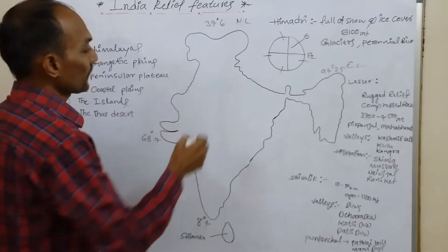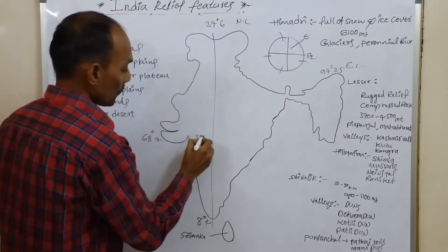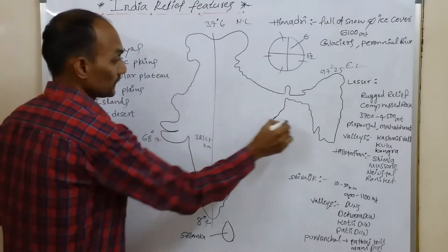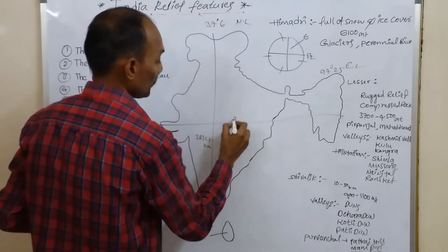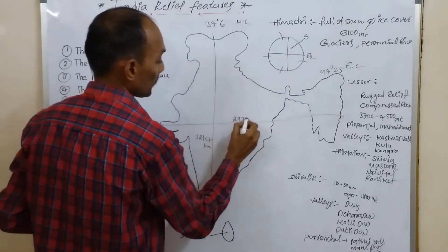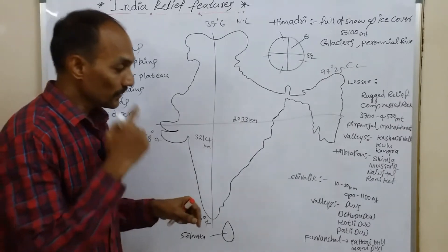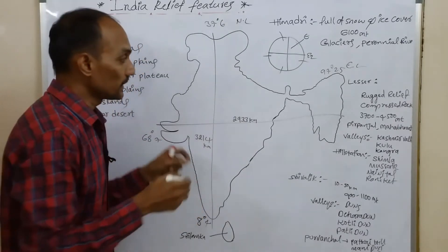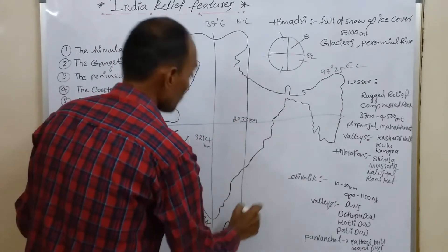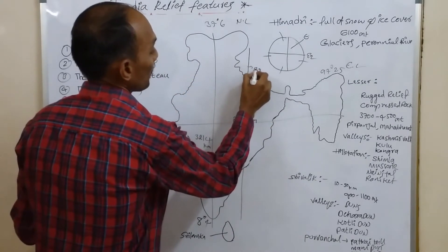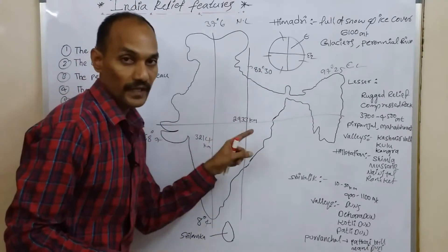If you see the distance, for example north to south 3,214 kilometers and east to west 2,933 kilometers. Our India follows the Indian Standard Meridian, that is 82 and a half degrees eastern longitude.